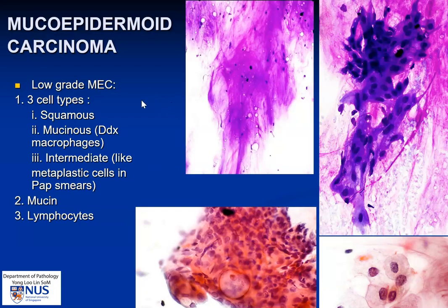To summarize, in low-grade mucoepidermoid carcinoma we would generally see abundant mucin in the background. We would try to look for three cell types: the squamous ones with denser cytoplasm; the mucinous cells, which have abundant cytoplasmic mucin and sometimes resemble macrophages; and the intermediate cells, which can look like metaplastic cells in Pap smears or just smaller cells with higher NC ratios. A final point to note is that sometimes we can see lymphocytes in the background in low-grade mucoepidermoid carcinoma.